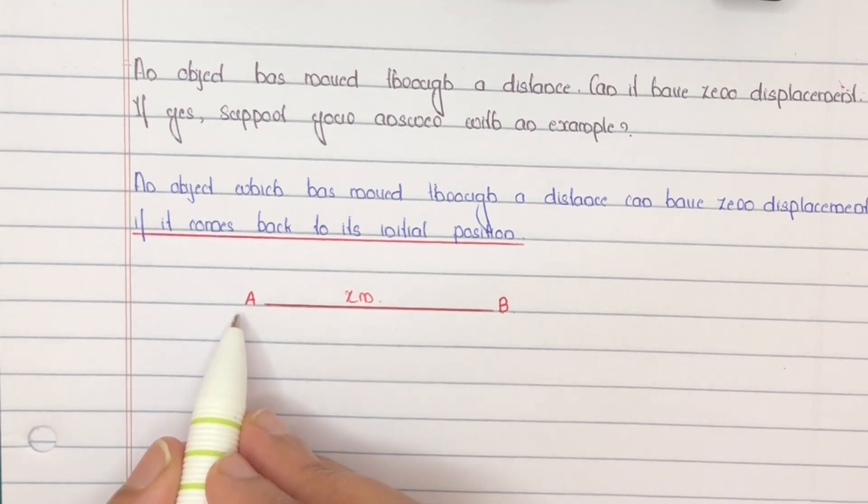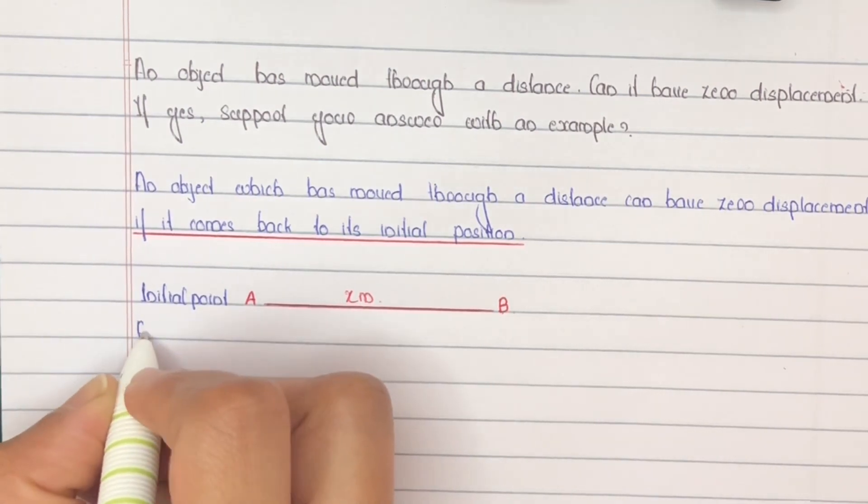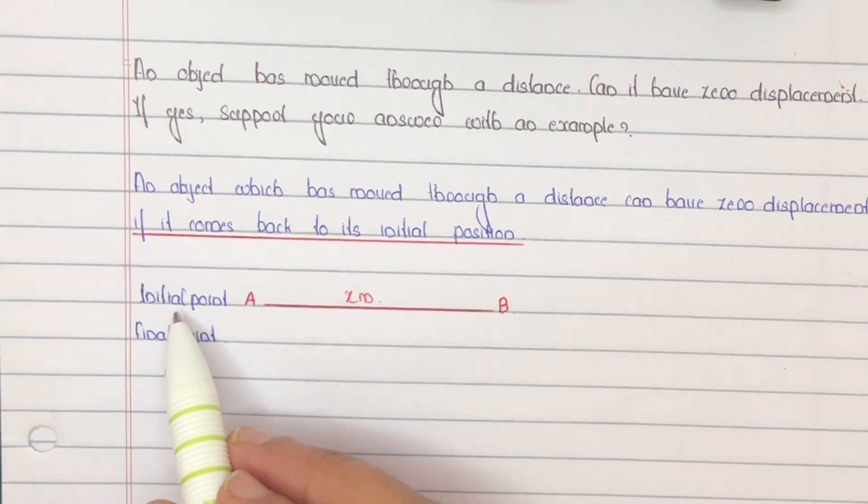Initial point at A, final point also at A. So in this case, there is no distance between initial and final point. So the displacement will be zero.